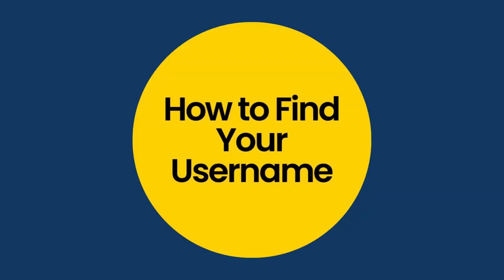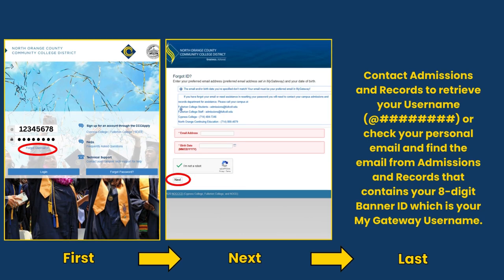Now we will go over how to find your username. If you do not remember your username, which is your Banner ID number, please follow these steps. On the My Gateway login page, first click on Forgot Username. Next, input your personal email address, date of birth, and click I am not a robot, then click Next. If you receive an error page, please contact Admissions and Records to retrieve your username, or check your personal email for the email from Admissions and Records that contains your eight-digit Banner ID, which is your My Gateway username.